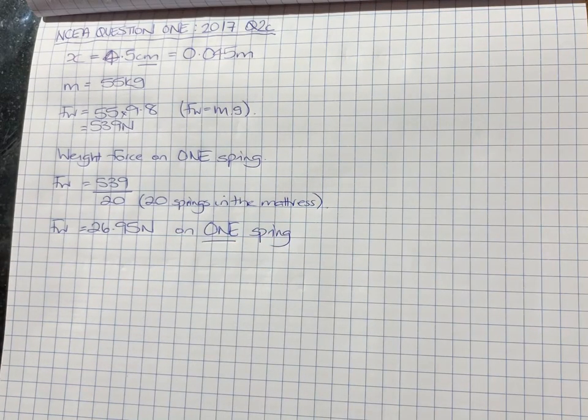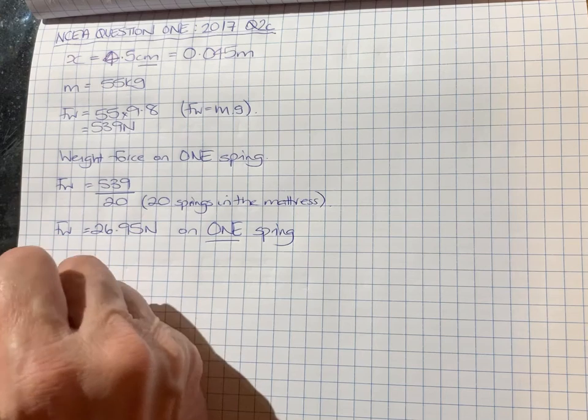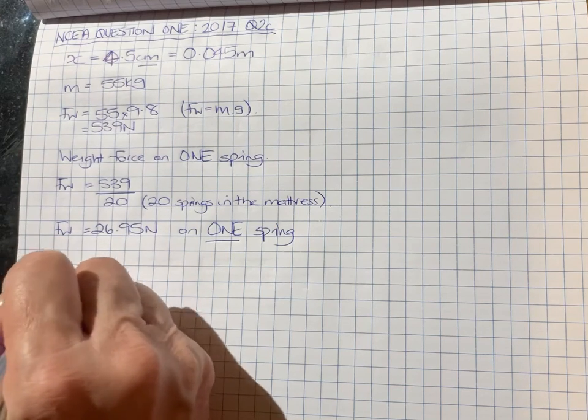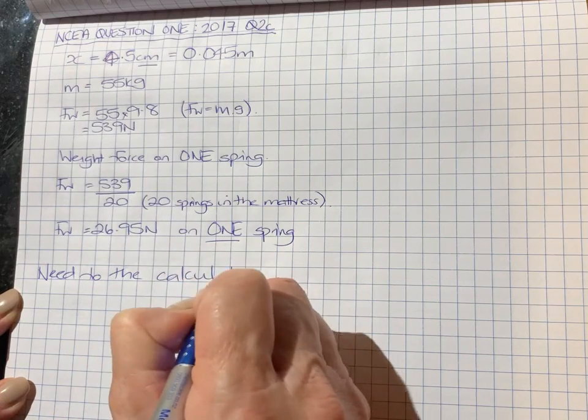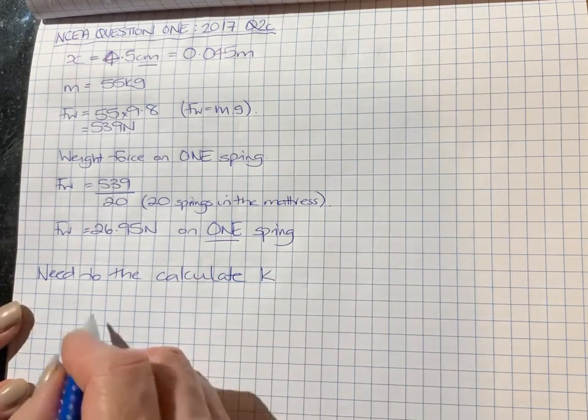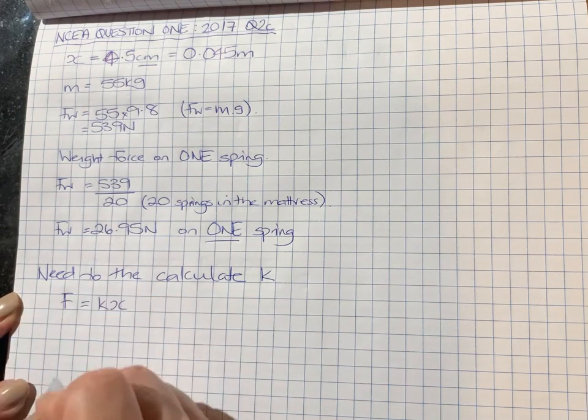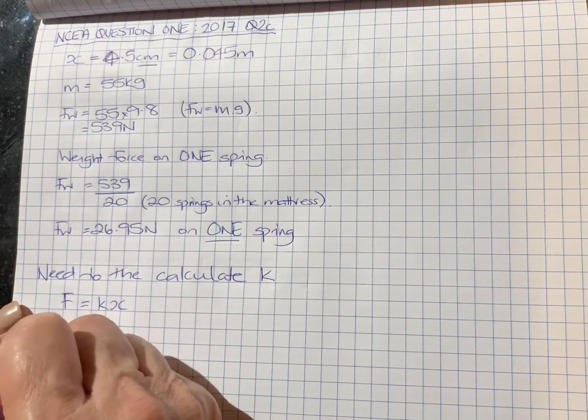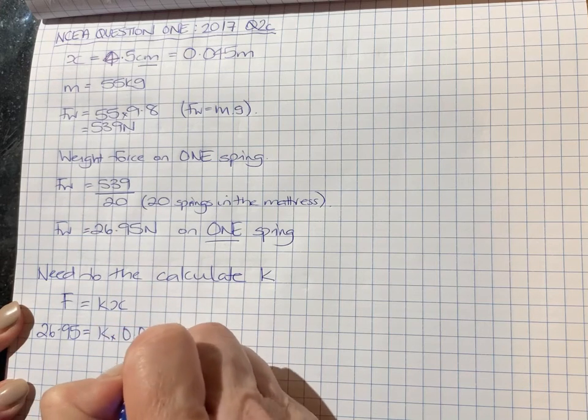Now, the reason we have to work that out is because we're told that one spring compresses by 4.5cm. Now we need to do that in order to work out the spring constant. So the next thing we need to calculate is the spring constant, which we know is positive. So we can just use F equals kx.